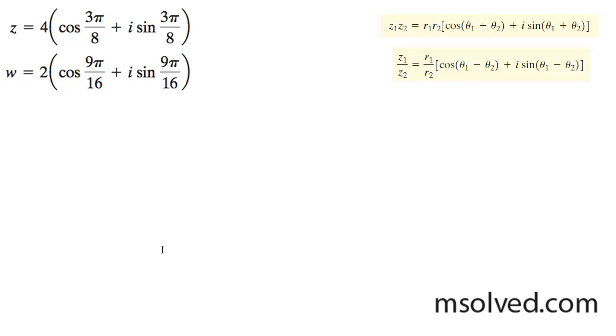I'm going to find the product and the division of these two equations. So we're going to do first, z times w is going to be equal to 4 times 2 times the cosine of 3 pi over 8.